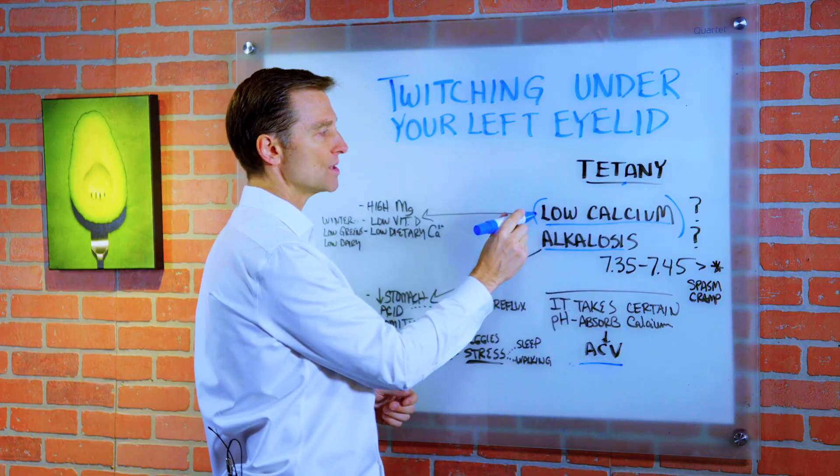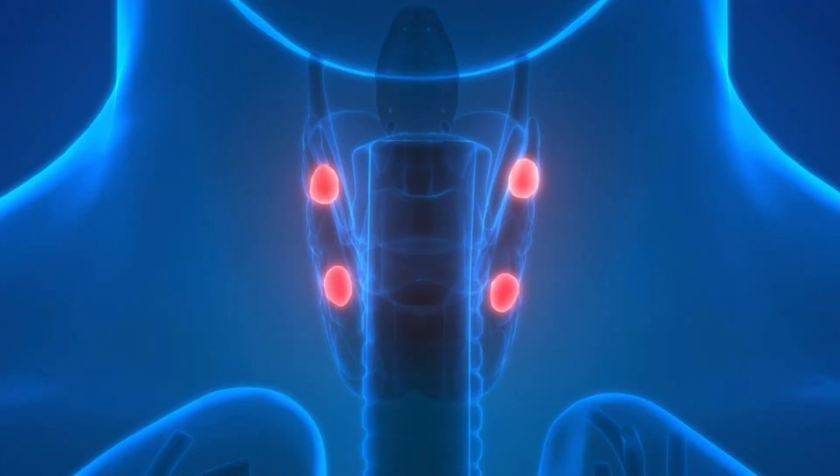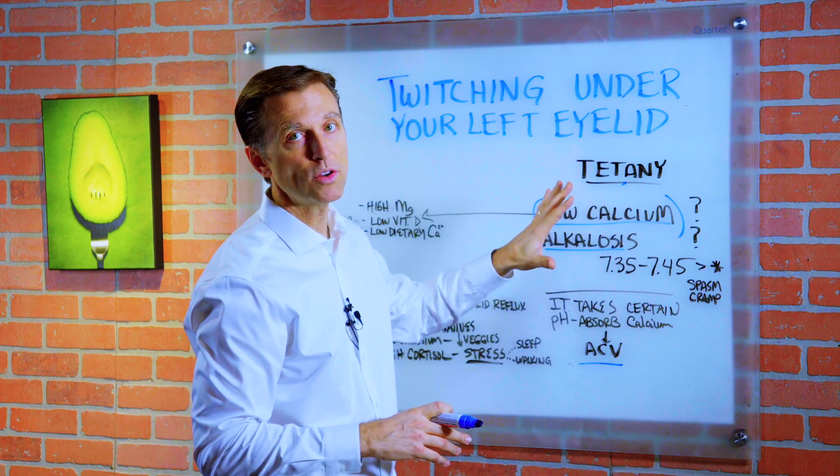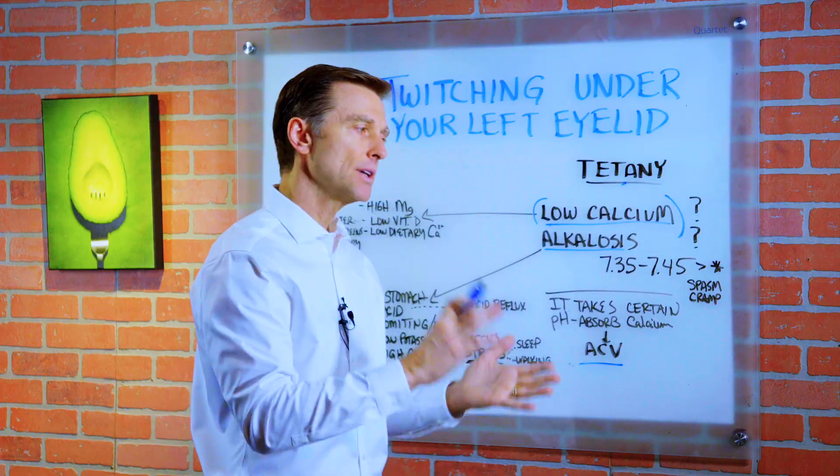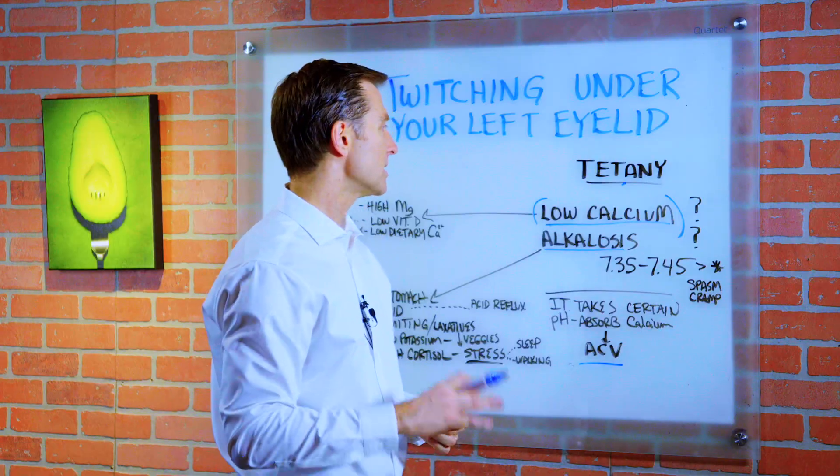First, let's talk about the potential reasons why you might have low calcium. It could be rarely a parathyroid problem. In other words, if you have tetany and you do all the things that I'm going to tell you and it still doesn't go away, go to your doctor, get checked, and they might find a parathyroid problem. It's rare, but it's a possibility.